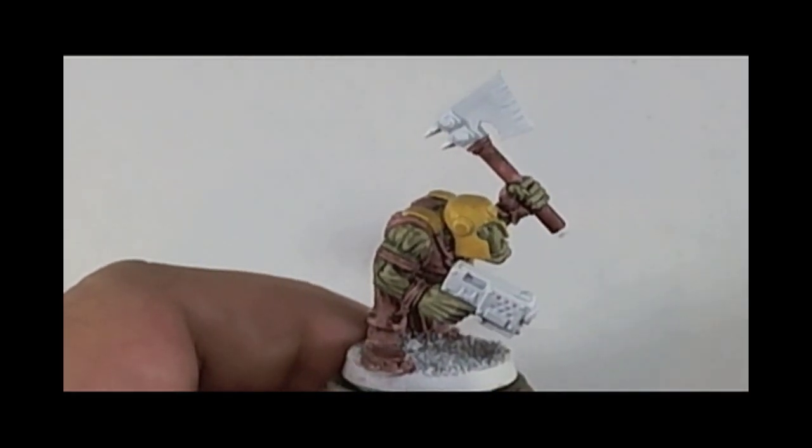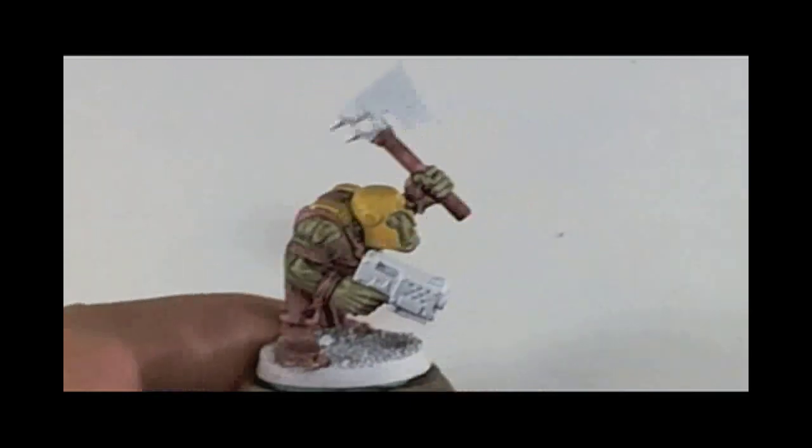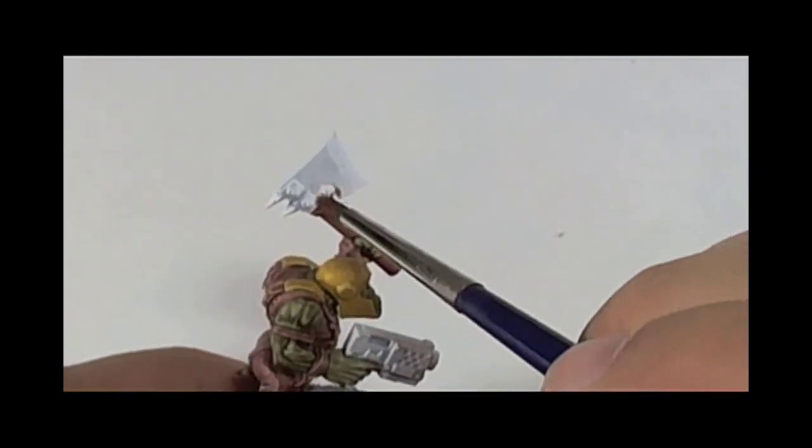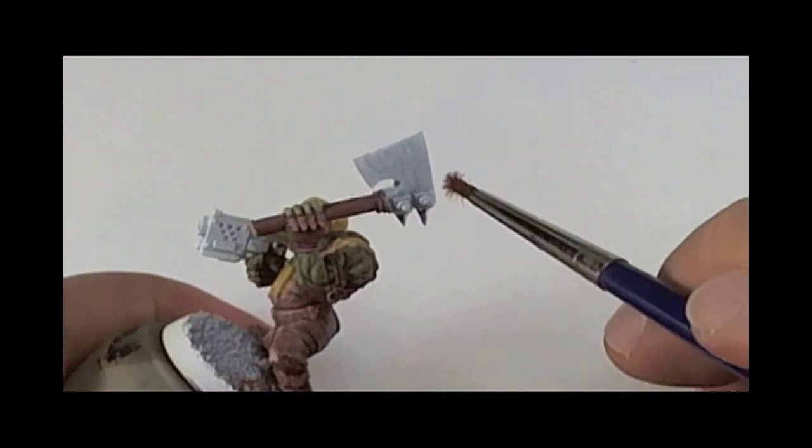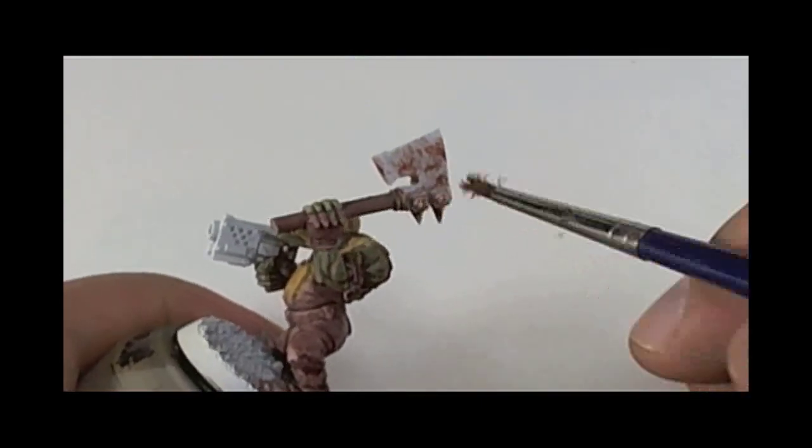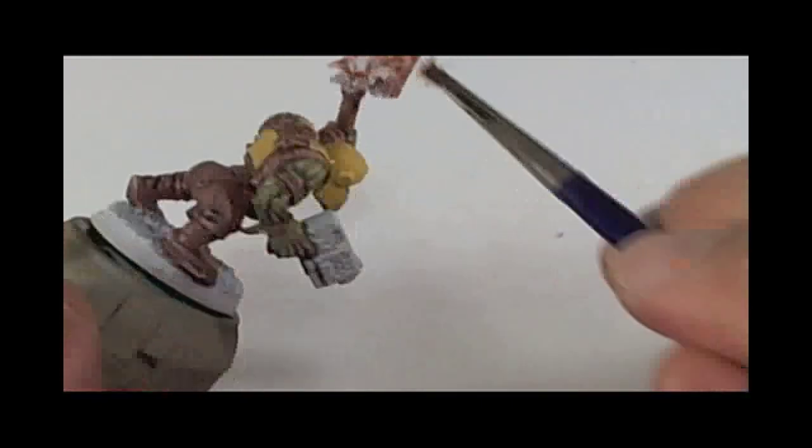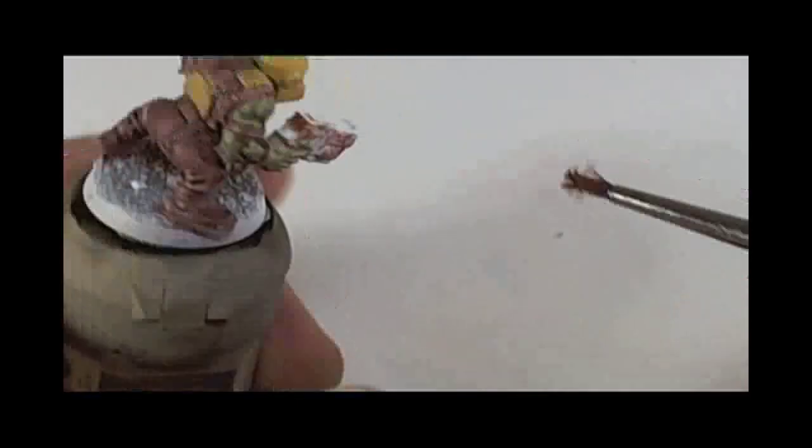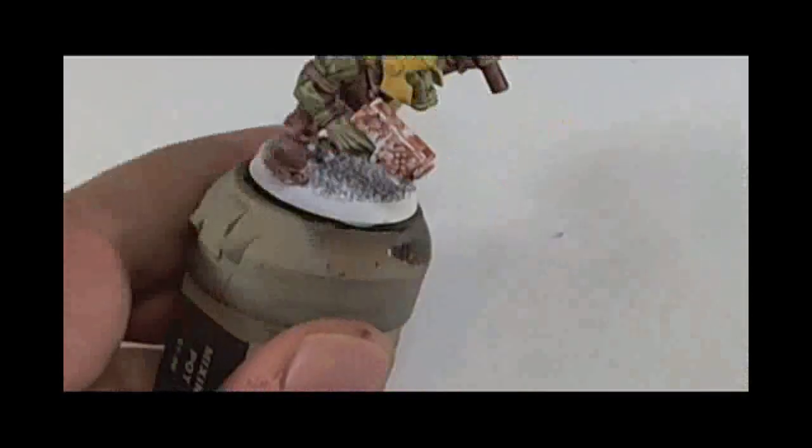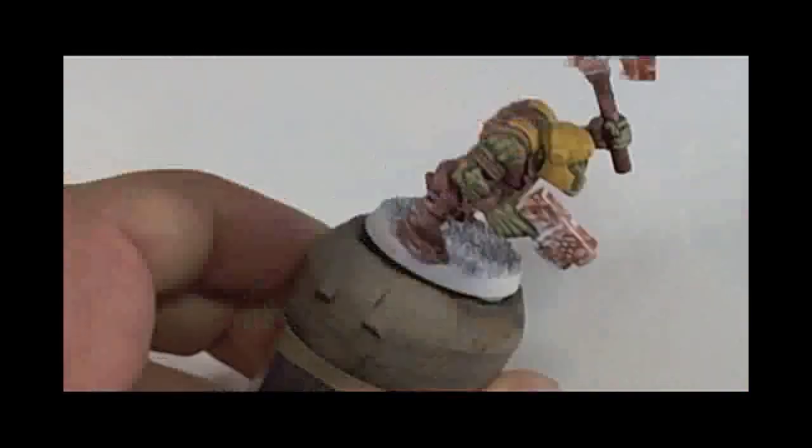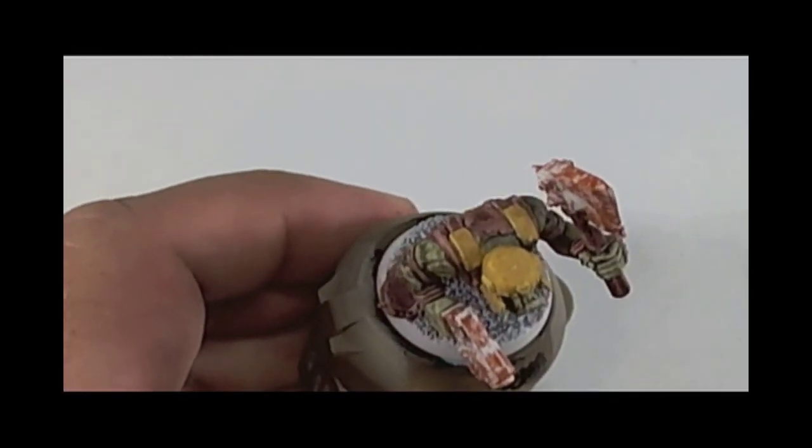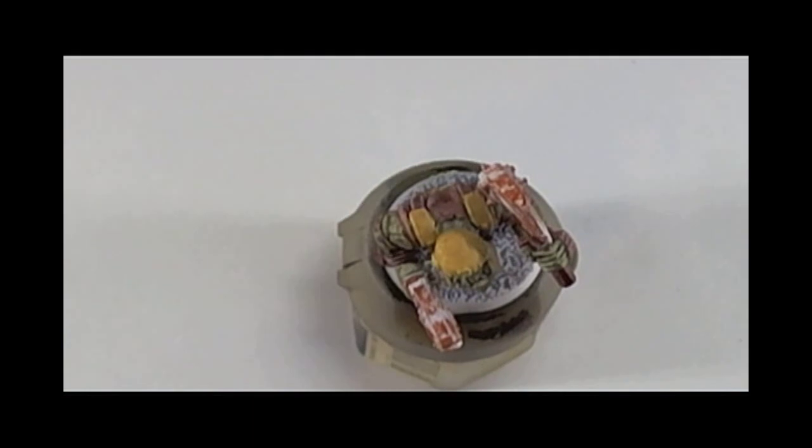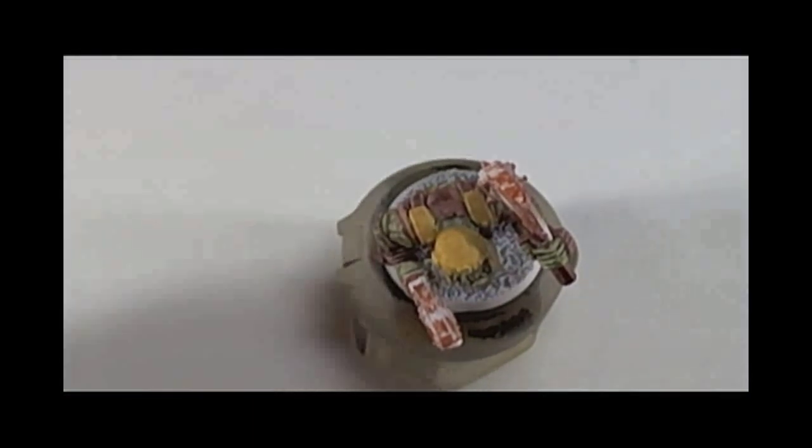And the stippling technique itself is mainly like you load your brush, an old brush, with enough paint to do a heavy dry brush, and it's a stabbing motion that replicates blotches of colors where we need the rust. So once the brown is done, we go with the orange.